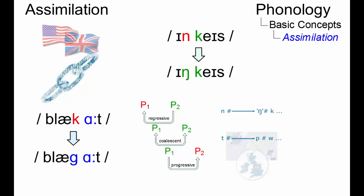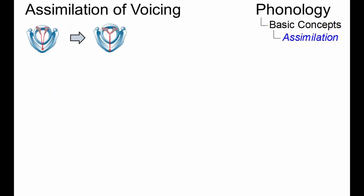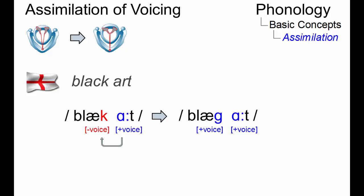The first is referred to as assimilation of voicing, where two phonemes become alike in terms of voicing. An example is black art, where the voiceless velar plosive in black may become voiced under the influence of the initial vowel of art.